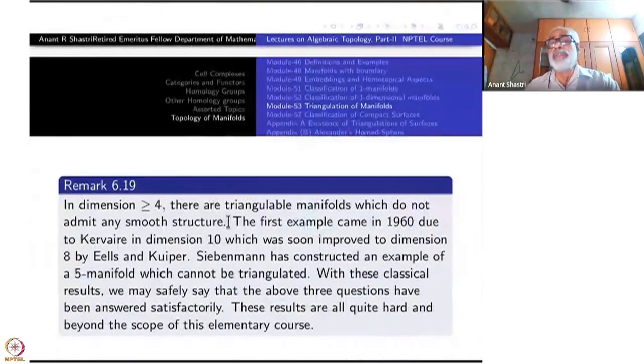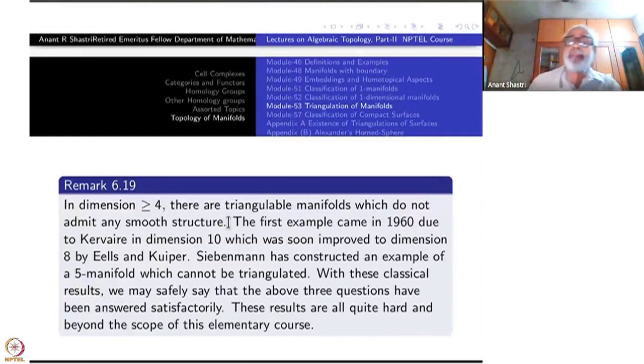A theorem due to Cairns in 1935 says that every smooth manifold is triangulable. There is an improved version in Whitehead 1940, which gives a neater proof and a stronger result. One is easy, two is Rado, three is Moise.